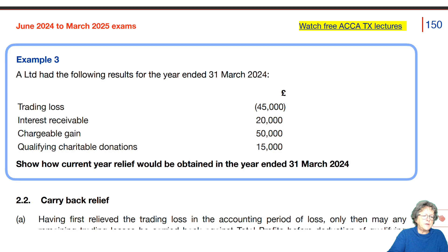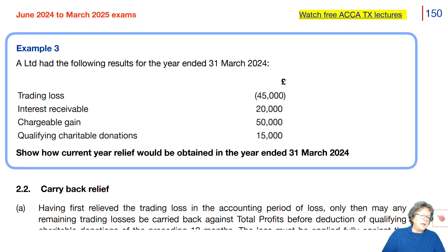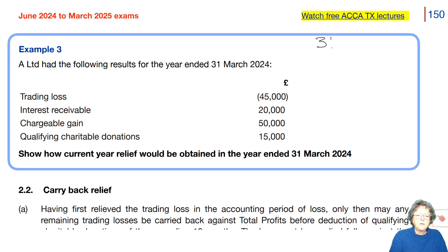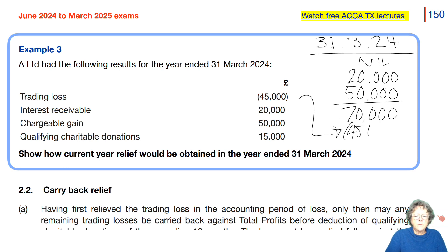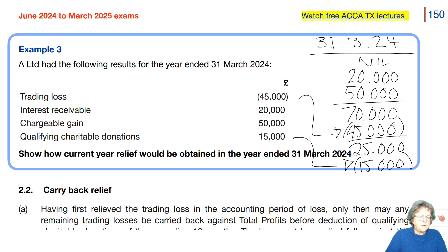Let's have a look at a simple example to go through those rules again. If we had a pro forma here for the 31st of March 2024, we would have nil, we would have 20,000, we would have a gain, which would give us 70,000. All or nothing claim — we've got to put all of 45 in, which gives us down to 25, plus the QCD gives us 10.